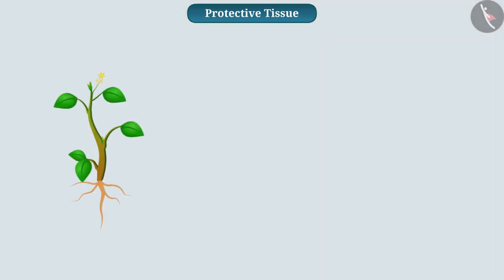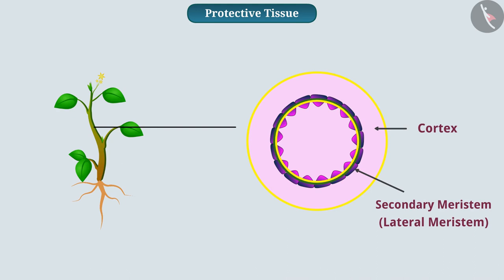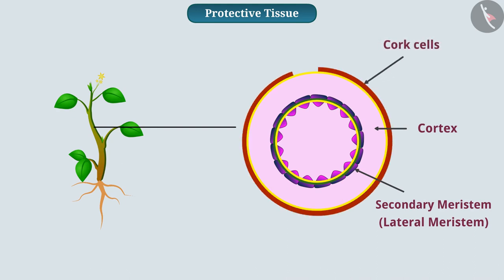The aging of a plant changes its external protective tissue. For example, a layer of secondary meristem — lateral meristem — is present in the cortex of the stem, which forms a layer of cork cells. These cells are dead and do not have intercellular space between them. Their cell walls contain a chemical substance called suberin, that makes plants air- and water-resistant.